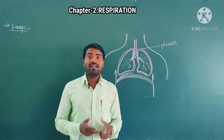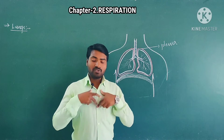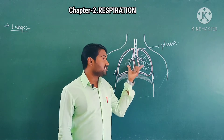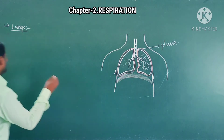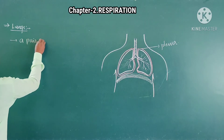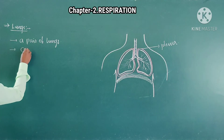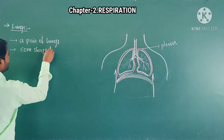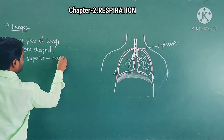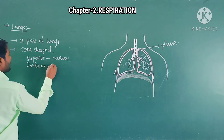In human beings, how many lungs are present? A pair of lungs are present which are located in the thoracic cavity. This cavity is called thoracic cavity, also known as chest cavity. If we talk about their shape, they are pole-shaped organs. On the superior side they are narrow, and on the inferior side they are broad.